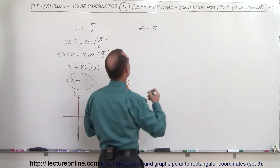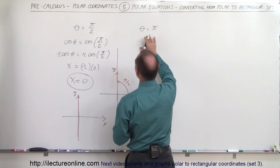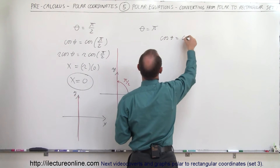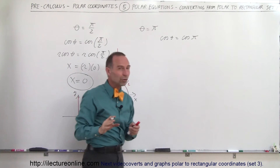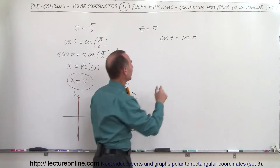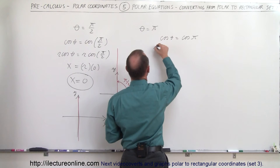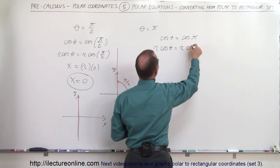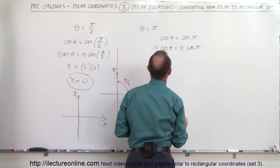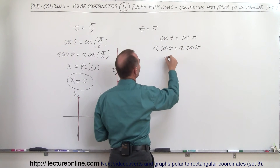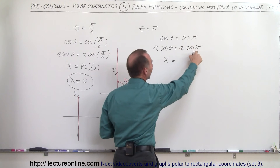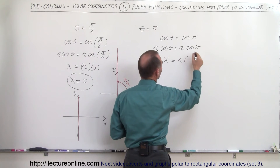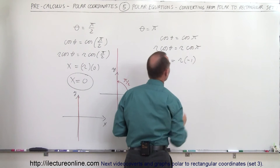Now let's try theta equals pi. Again, we're going to take the cosine of both sides, so the cosine of theta equals the cosine of pi. The next thing we do is multiply both sides by r. So we have r times the cosine of theta equal to r times the cosine of pi. R times cosine of theta equals x, and the cosine of pi equals negative 1, so x equals r times negative 1.